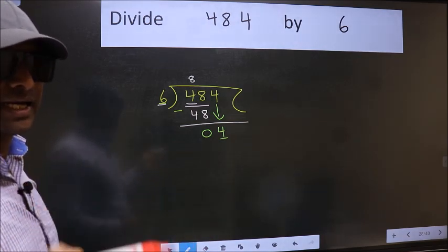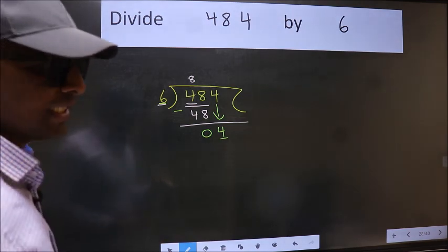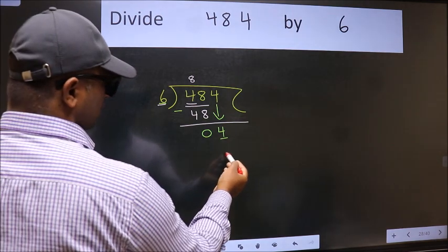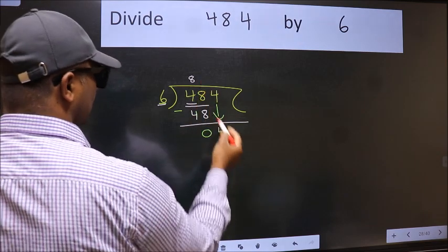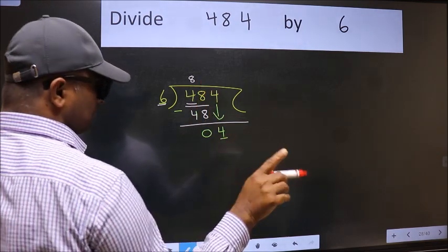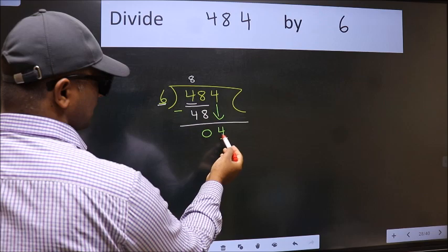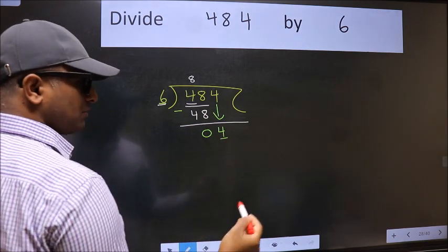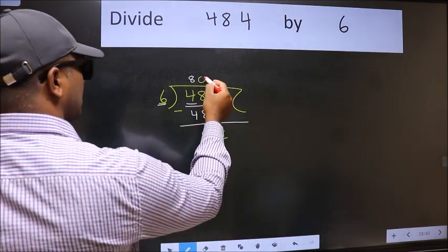Instead of that, what you should think of doing is, which number should we take here? If I take 1, we will get 6. But 6 is larger than 4. So what we do is, we take 0.